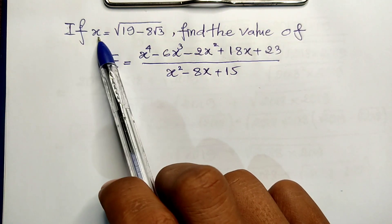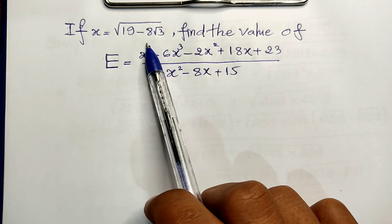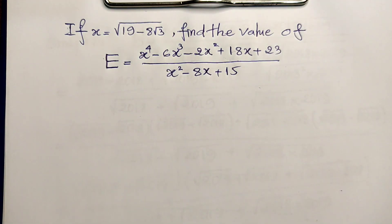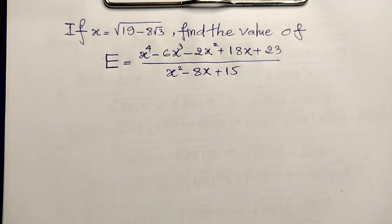Given that x equals the square root of 19 minus 8 square root of 3. Do you know how to solve this? If you know, please try it first, then come back to watch my video from beginning to end to verify your solution. Before we go to the solution, please don't forget to subscribe to my channel for more exciting videos. Now let's go to the solution together.